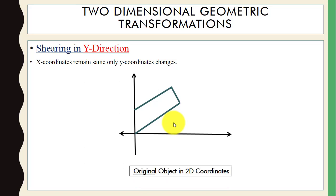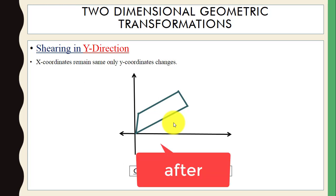Now we have shearing in the y-direction. Here you can see the original object in the 2D coordinate, and this is the object after shearing in the y-direction.